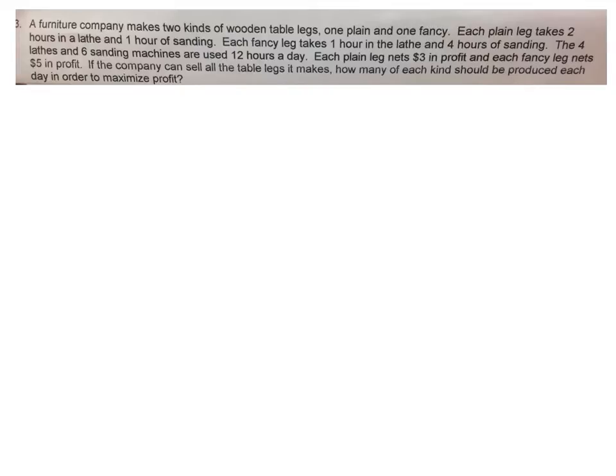Okay, this next problem is number three from the worksheet that we're going to do in class tomorrow, so you won't have to do number three tomorrow either. A furniture company makes two kinds of wooden table legs, one plain and one fancy. Each plain leg takes two hours in a lathe and one hour of sanding. And a lathe, if you didn't know, is the thing that spins it to where they can carve it into its fancy shapes. Each fancy leg takes one hour in the lathe and four hours of sanding. The four lathes and six sanding machines are used 12 hours a day. Each plain leg nets $3 in profit, and each fancy leg nets $5 in profit. If the company can sell all the table legs it makes, how many of each kind should be produced each day in order to maximize profit?